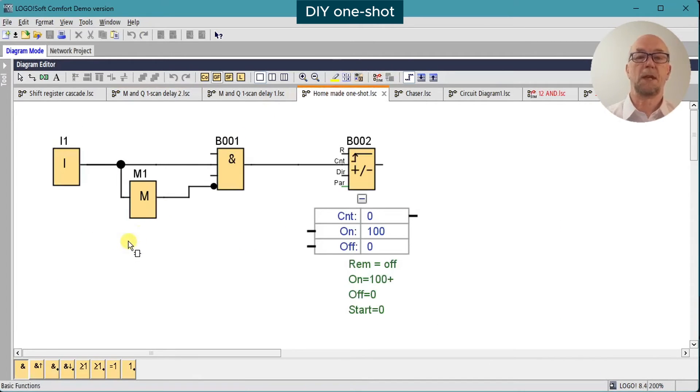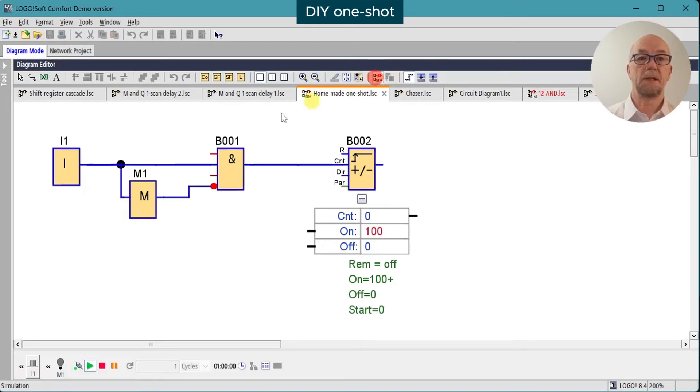So what use can we make of this? Well, it's possible to construct our own one-shot circuit. For example, run the simulation on this, trigger the input and hold it on, and notice we can't see the output of the AND gate. But if you watch the counter, we are getting a pulse on every trigger of the input.